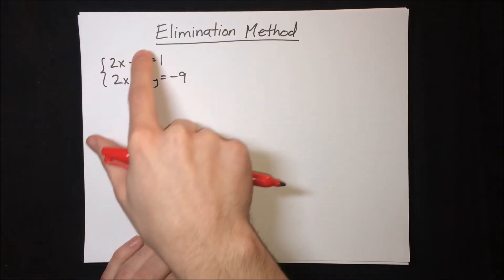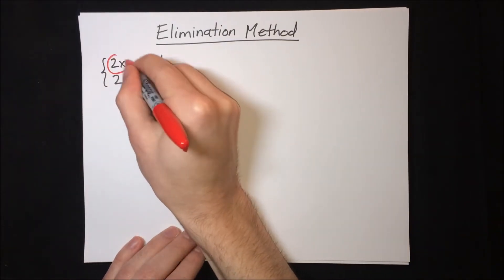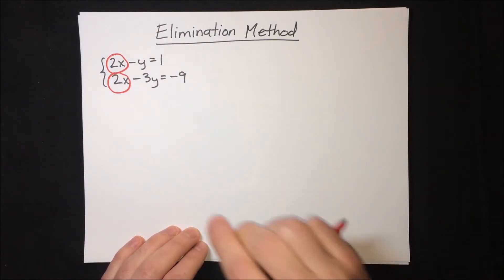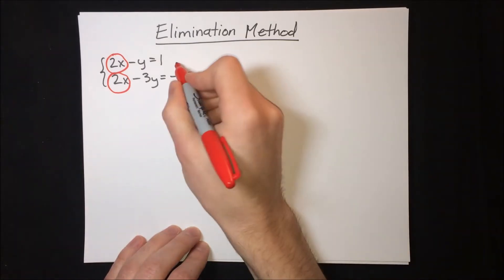Right now, none of the variables will cancel if we add the equations. But we have a 2x in both of the equations, so if we multiply one of the equations by negative 1 and keep the other the same, then we can cancel.